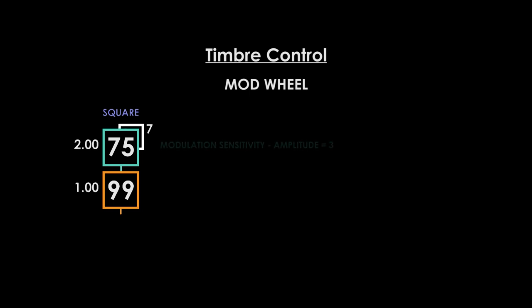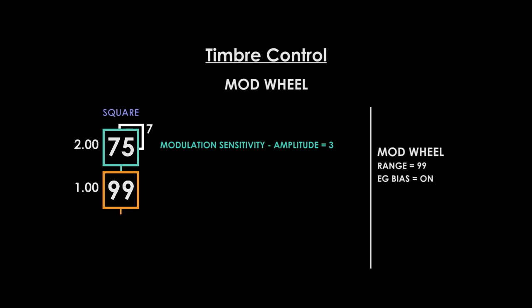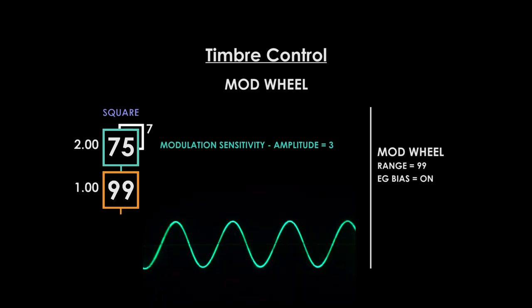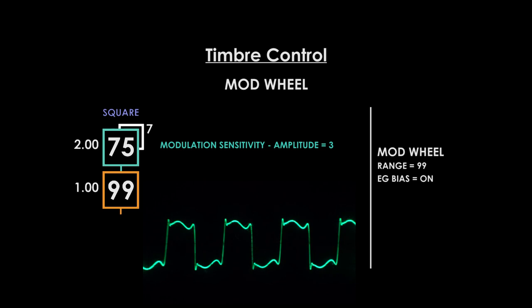Select your MF Square waveform patch that you've just saved. Select the modulator, go to amp mod sensitivity, and enter a value of three. This determines how sensitive the operator is to the mod wheel's position. Press Function, set mod wheel range to 99 and EG bias to on. Press the key and move the mod wheel — you are now controlling the modulator's output level amount in real time.